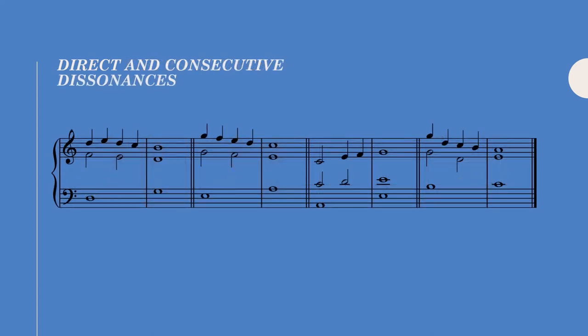There are no hard rules for consecutive and direct dissonances, but we have to be careful with how we treat them. Dissonances, whether direct or consecutive, need to always be treated properly. In general, when writing consecutive dissonances, we'll very often prefer moving from a harsher dissonance to a softer dissonance. For example, here we have a major seventh moving to a minor seventh — a major seventh is a harsher dissonance than a minor seventh. For seconds, minor seconds are harsher than major seconds. In three-voice counterpoint, we want to avoid consecutive dissonances that move from soft to harsh, as shown here where we move from a minor seventh to a major seventh.